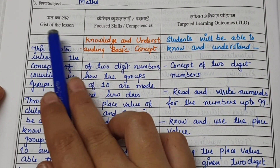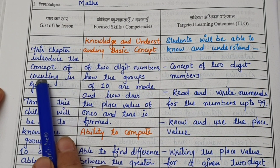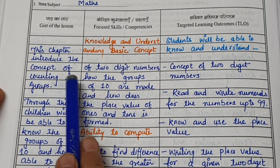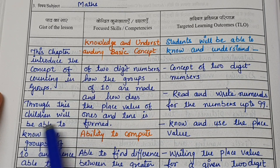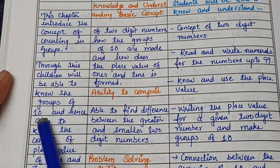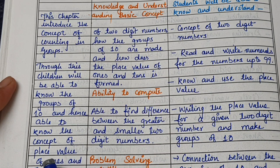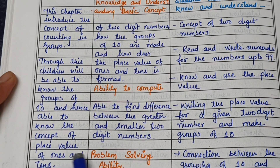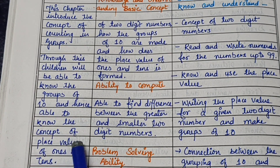First of all, the gist of the lesson. This chapter introduces the concept of counting in groups. Through this, children will be able to know the groups of 10 and hence understand the concept of place value of 1s and 10s. So basically in this chapter, we'll talk about the place value of 1s and 10s.